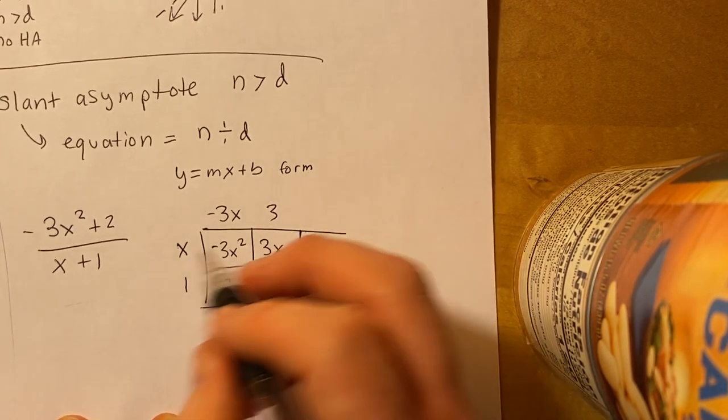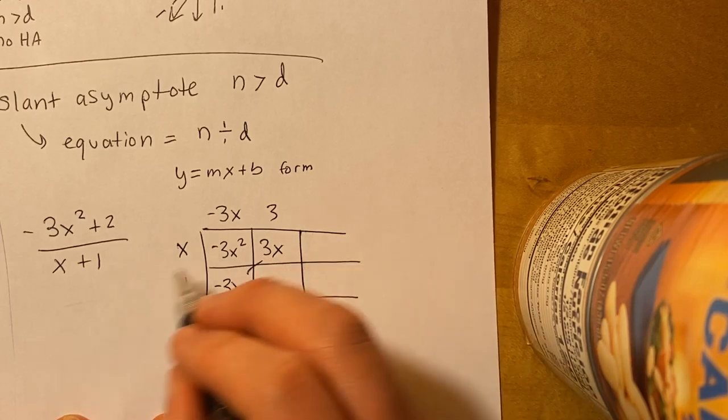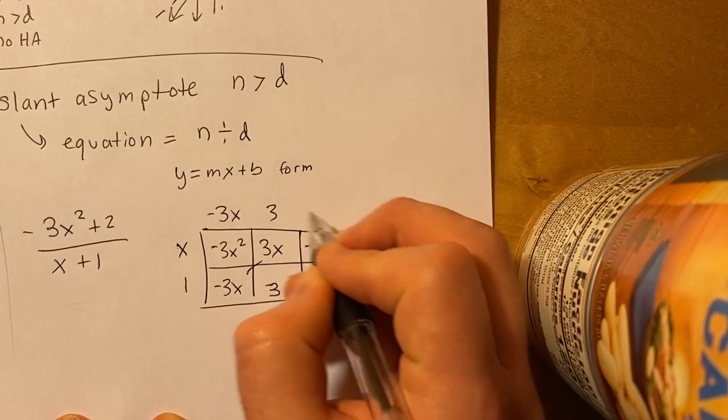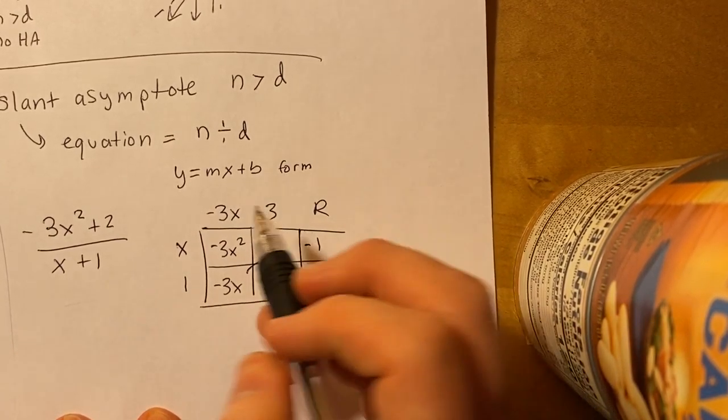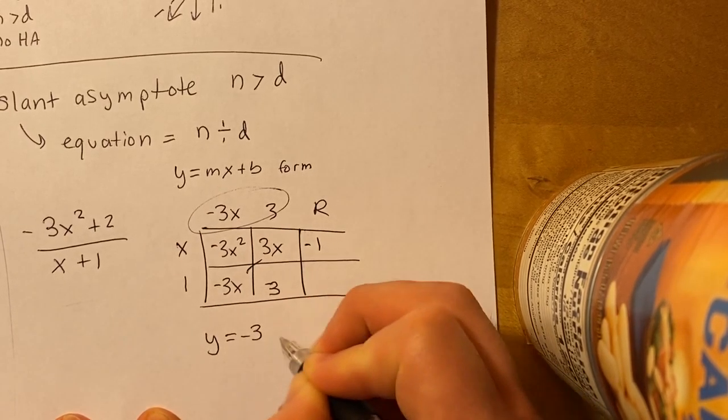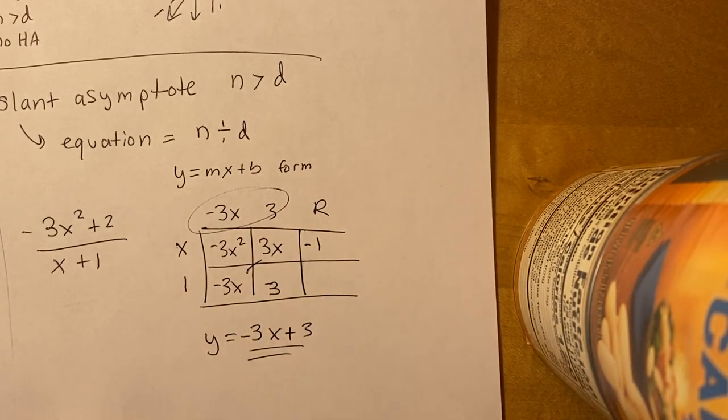And yes, so we'd like 3 here. And then our remainder, like we have this 2, so it would be negative 1. But the remainder doesn't matter here. Actually, it's not going to matter at all. So we have our slant asymptote here, which is y equals negative 3x plus 3. Not too bad. So then that is our slant asymptote.